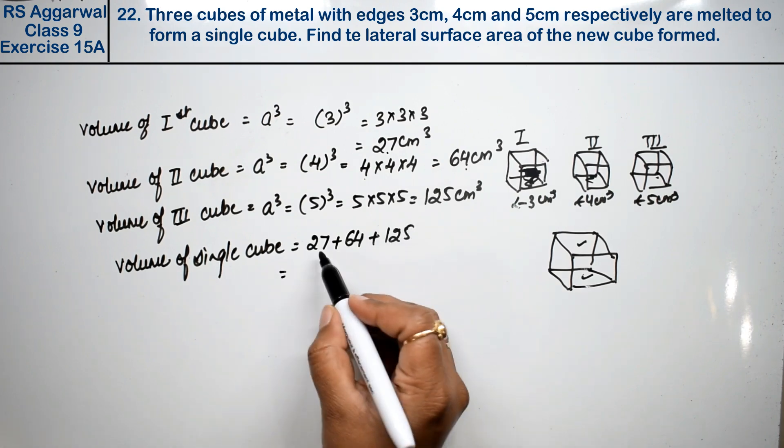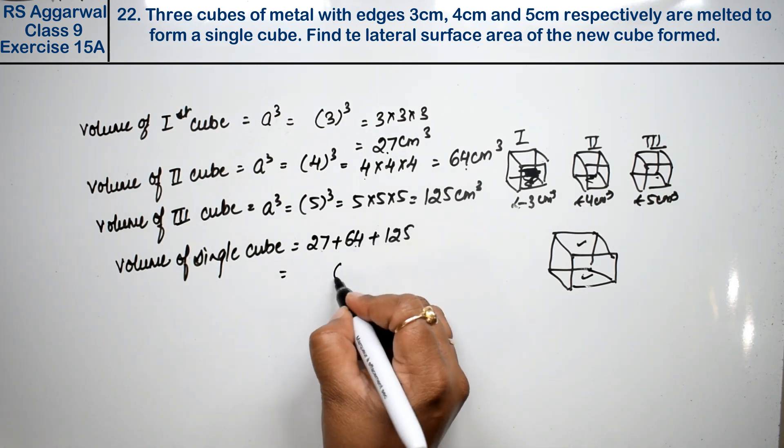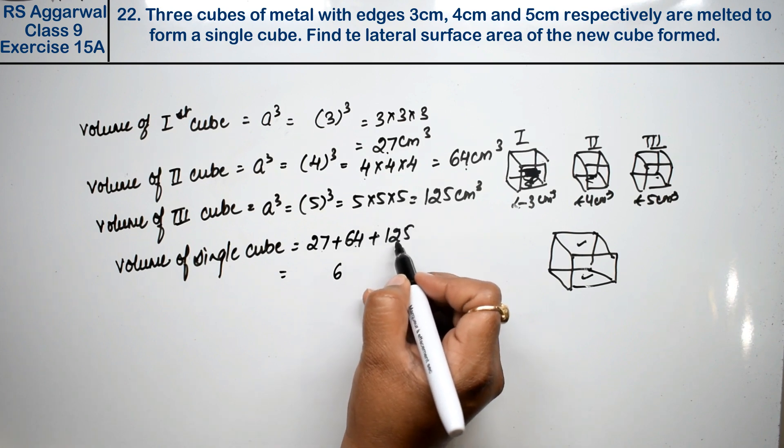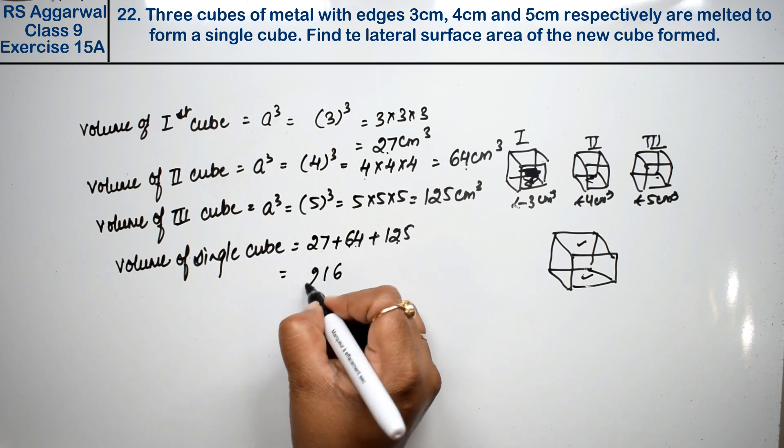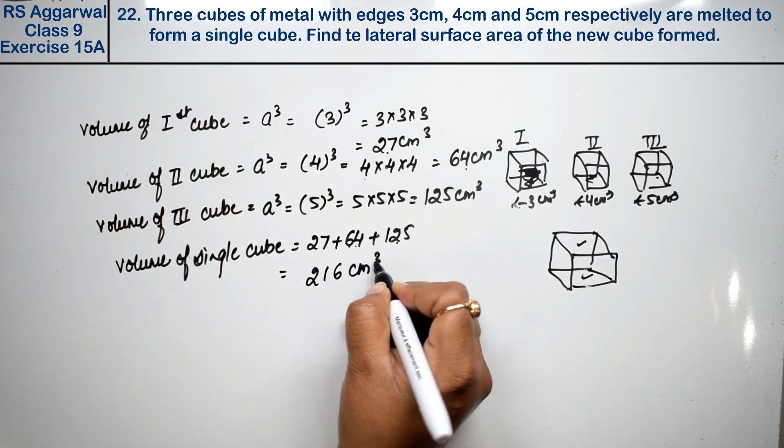How much is this? 27 + 64 + 125... carry 1... this equals 216 cm cube.